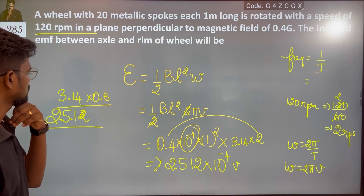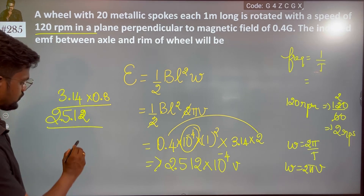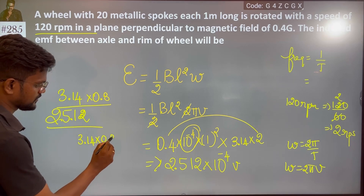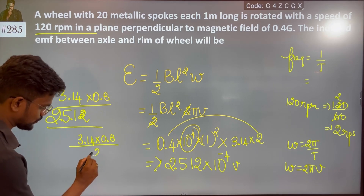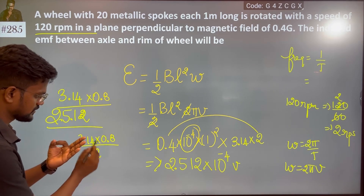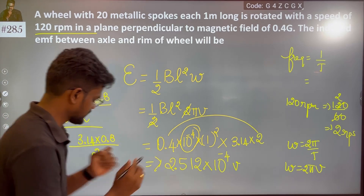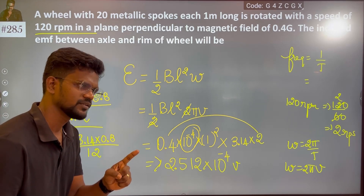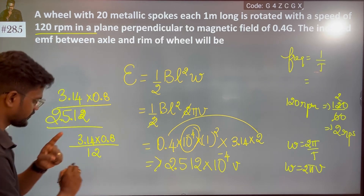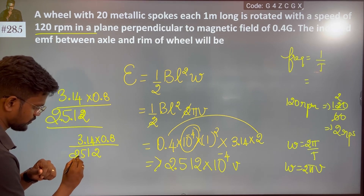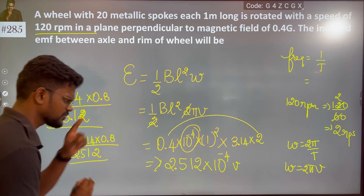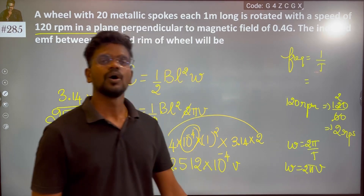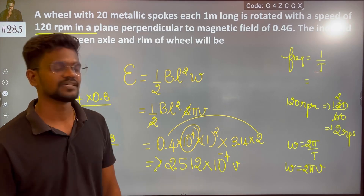0.8 multiplied by 3.14 becomes 2.512. Let me verify: 3 times 8 is 24, plus 1 is 25 — yes, 2.512 is correct. So the final answer is 2.512 into 10 to the power minus 4 volts. That is the induced EMF.